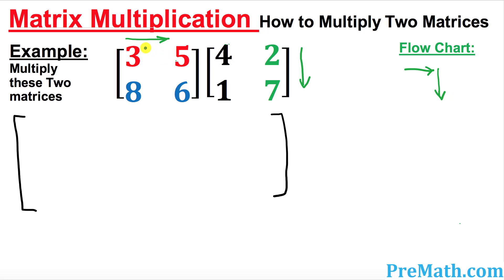When we multiply, we're going to look at the very first row on the left-hand side matrix — since this goes from left to right, we are looking at the row. We're going to multiply this row with the very first column on the right-hand side, which goes top to bottom. Whenever you multiply this row with this column, always make sure your first number multiplies with the first and the second with the second.